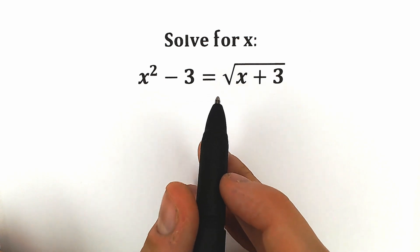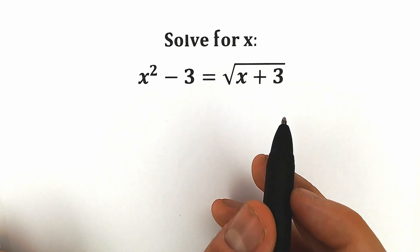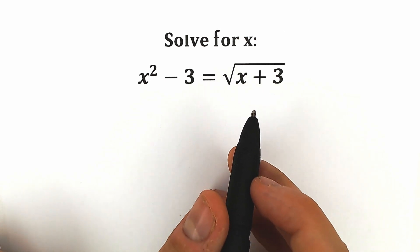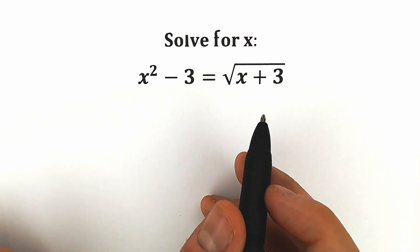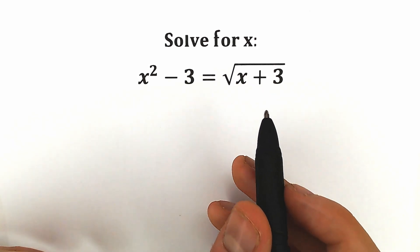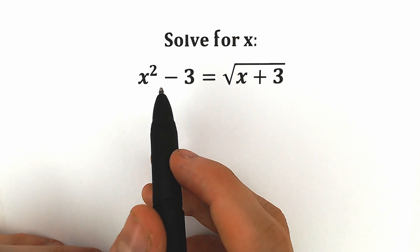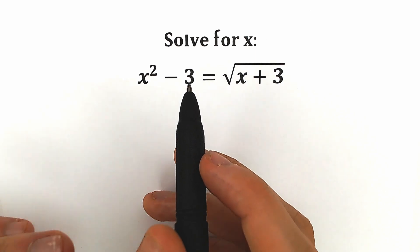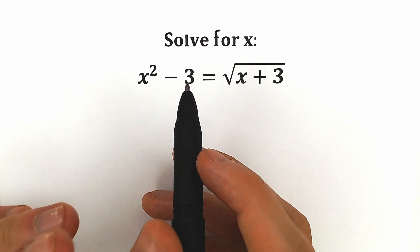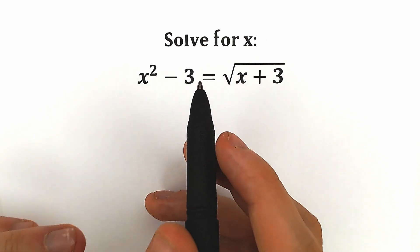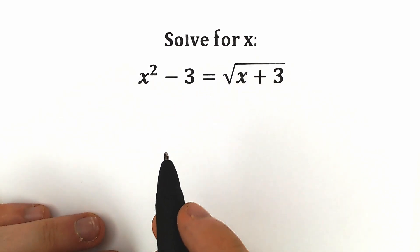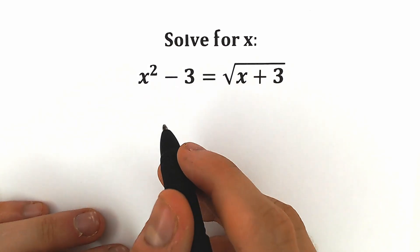We have x squared minus 3 equal to the square root of x plus 3. A lot of students may be saying, hey mister, this is a very interesting question — we can easily square both sides. But this is only on the first look. Let's see what will happen when we square both sides.